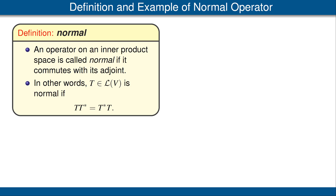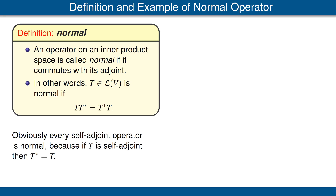Let's start with the definition of a normal operator. An operator on an inner product space is called normal if it commutes with its adjoint. In other words, an operator T is normal if and only if T times T* equals T* times T. Clearly, every self-adjoint operator is normal, because if T is self-adjoint, then T* equals T, and hence the commutativity equation is clearly satisfied.